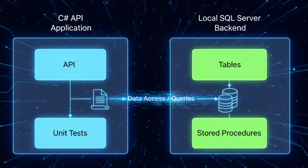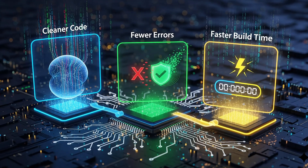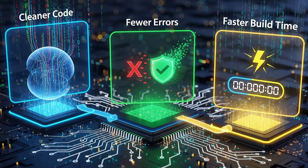Are premium AI models in GitHub Copilot really worth paying for? In this video, I'll put them to the test by building a complete C-sharp API application and backend database completely from scratch using GitHub Copilot agent mode. We'll compare the results using both free and premium models, see where the free tier struggles, and if Claude Sonnet 4 can deliver cleaner code with fewer errors and an overall faster build time. If you ever wondered if GitHub Copilot Pro was worth the $10 a month, this video will give you the answer.